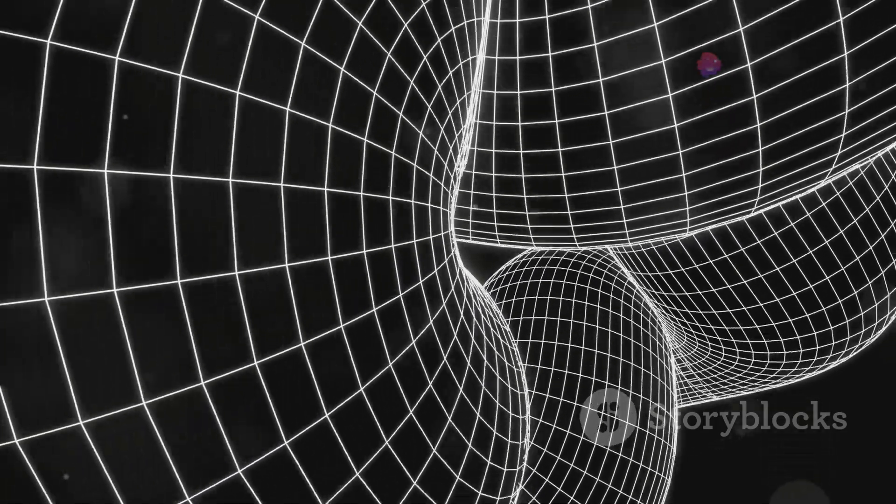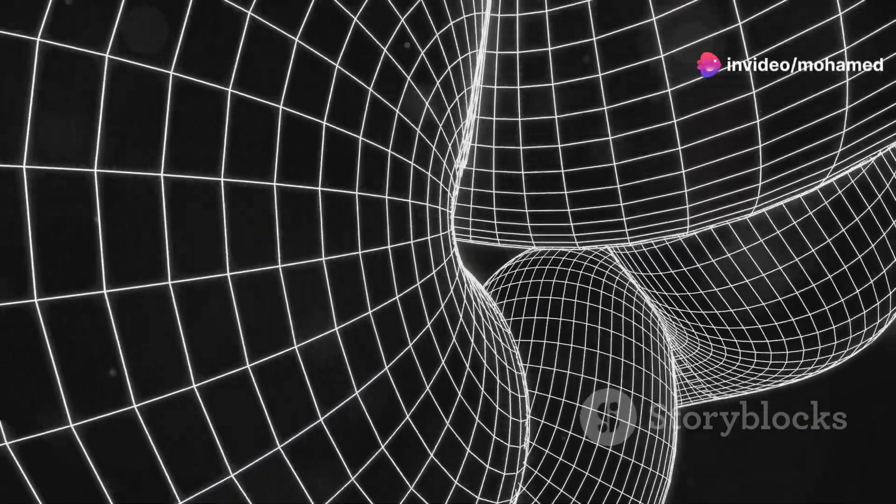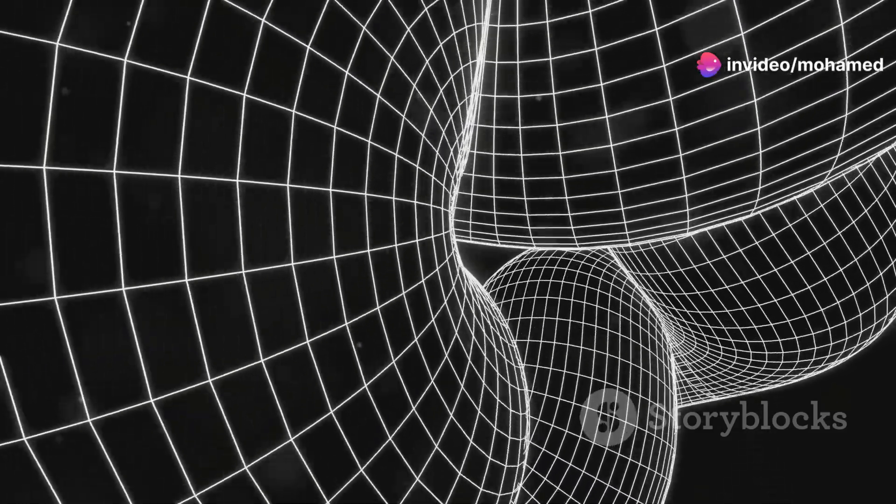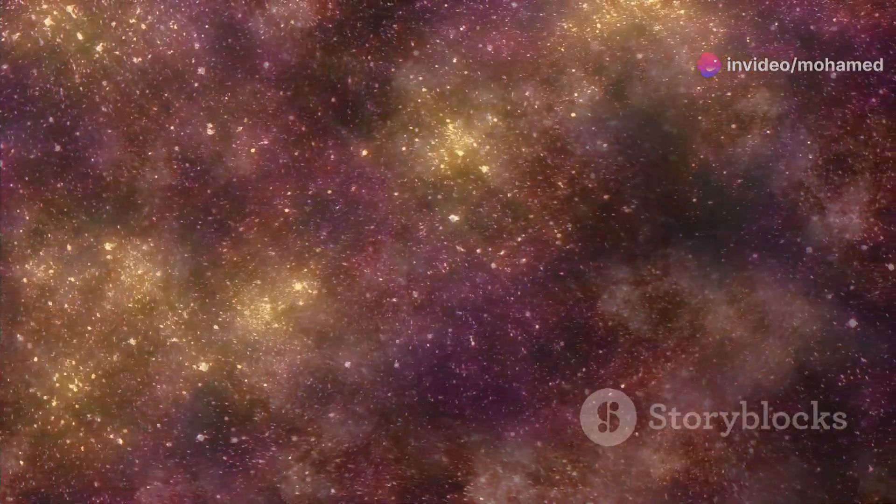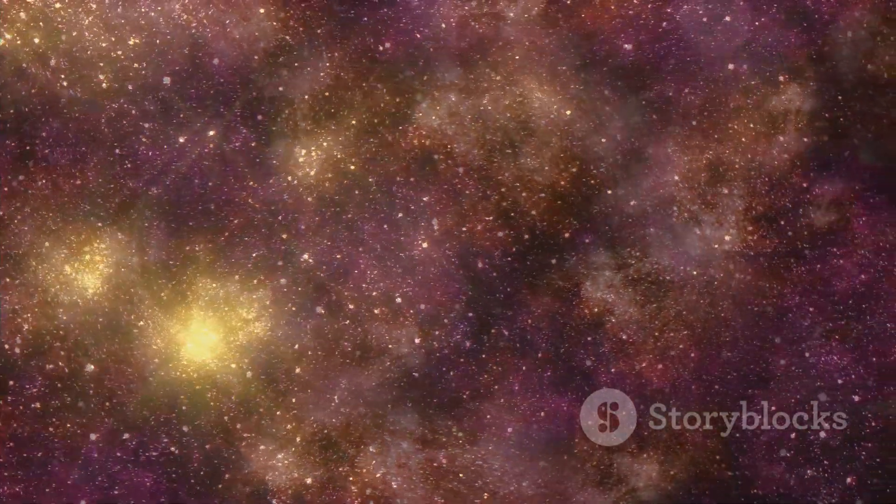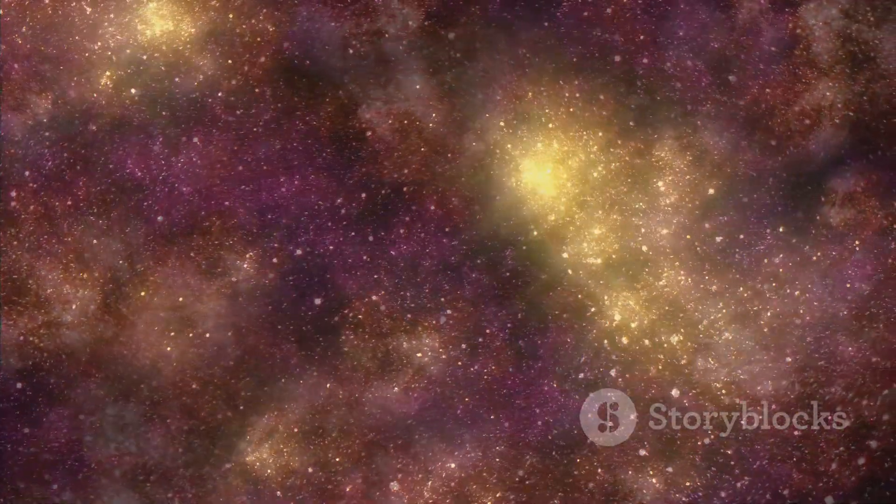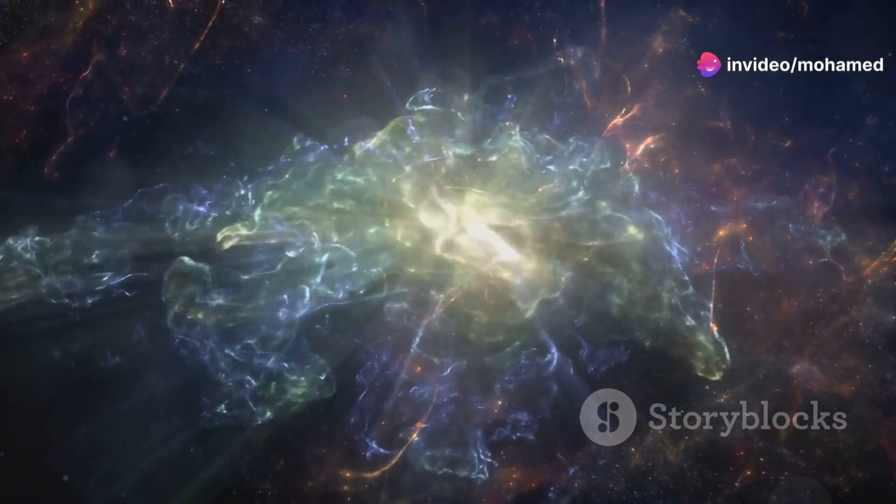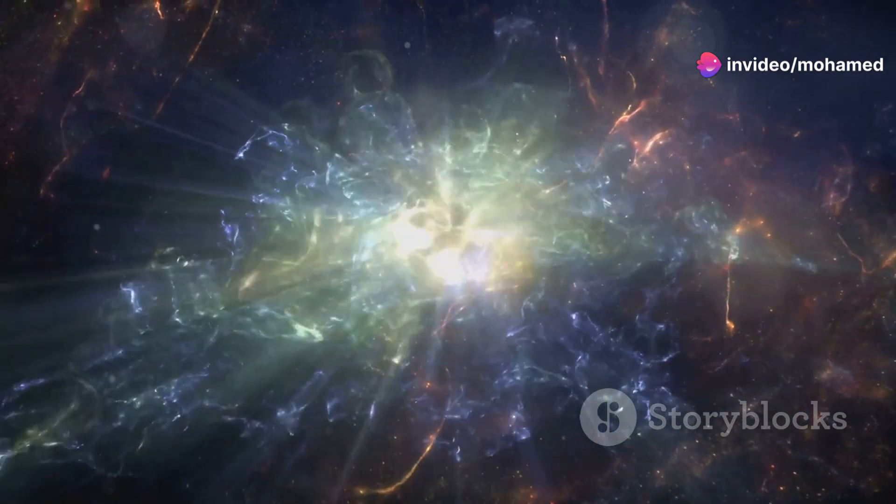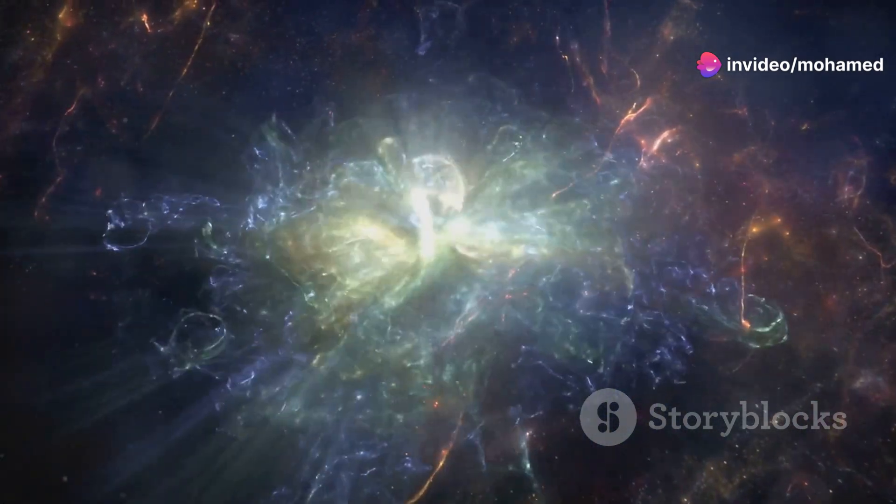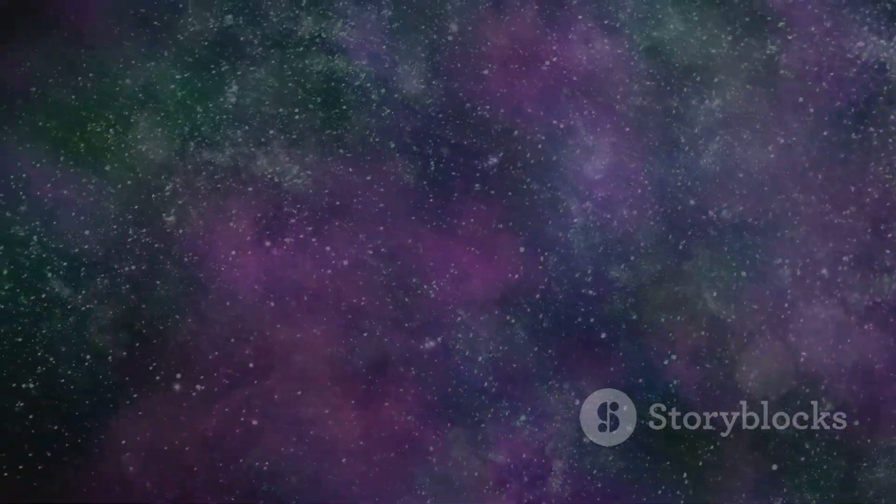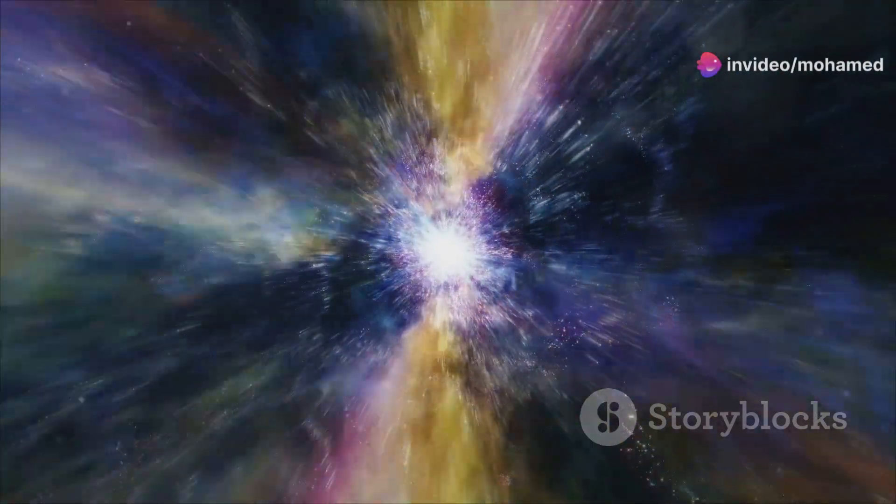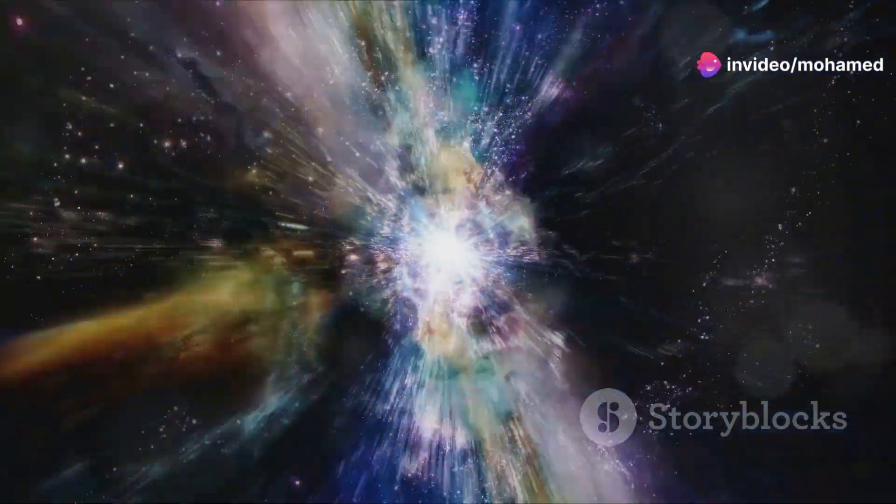This idea stems from the cosmological principle, which states that the universe is homogeneous and isotropic on large scales. In other words, no matter where you are in the universe, it looks roughly the same in every direction. This concept challenges our intuition, but aligns with the observations of the cosmic microwave background radiation. This uniform radiation suggests that the universe is indeed isotropic and lacks a central point. It's a reminder of the profound and often counterintuitive nature of cosmic reality.